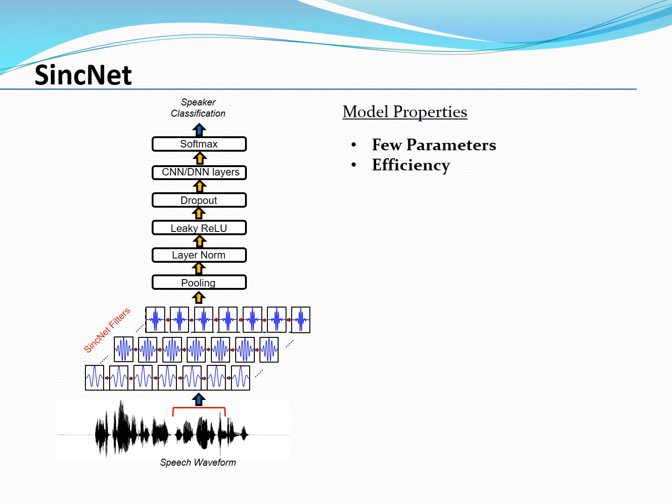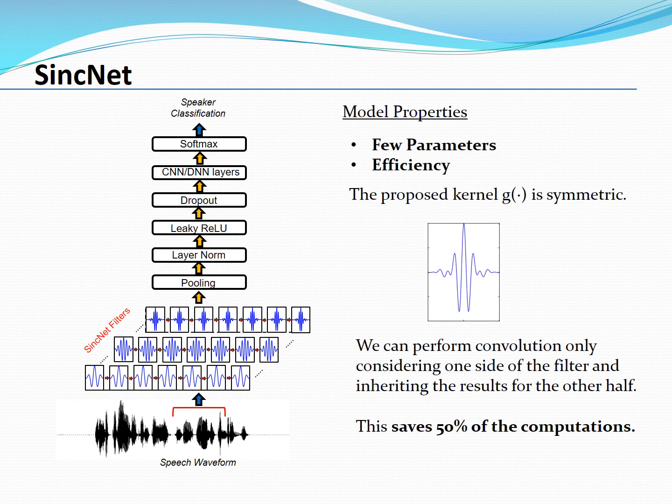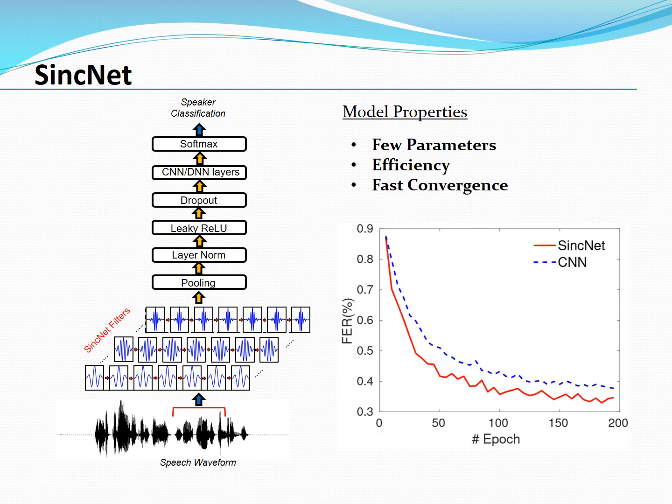Moreover, we can implement SincNet in a very efficient way. Why? Because the proposed kernel G is symmetric. So we can basically perform the convolution only considering one side of the filter and inheriting the results for the other half. And this saves 50% of the computations. SincNet also converges faster than a standard CNN. In this figure we show the frame error rate obtained on a speaker identification task trained on TIMIT. And here we show basically the performance on the held-out data. And we can see that the SincNet model converges faster and to a better performance than a standard CNN.